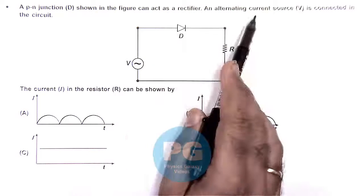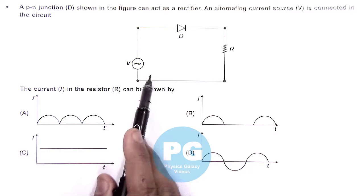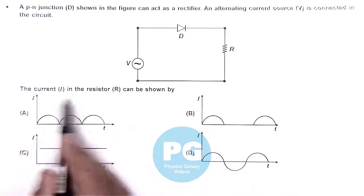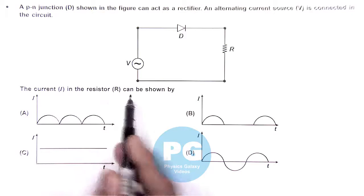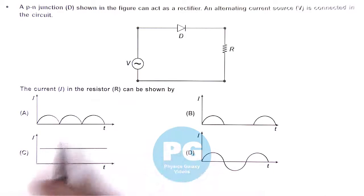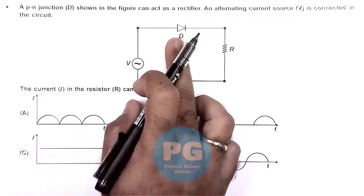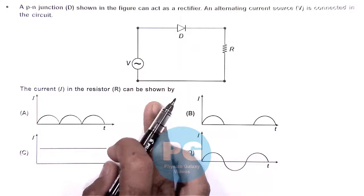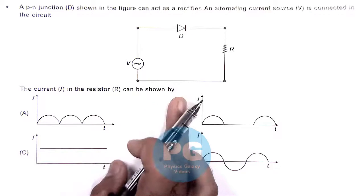An alternating current source V is connected in the circuit and we need to check the current I in the resistor can be shown by. Here for an alternating source by using a single diode we know well that it behaves like a half wave rectifier.